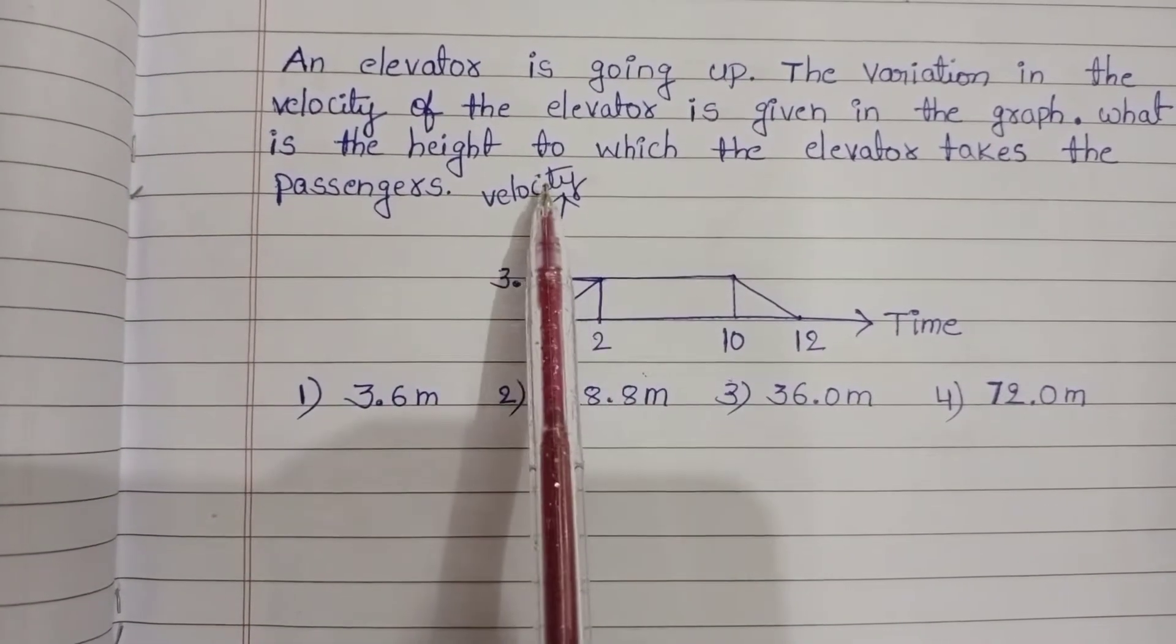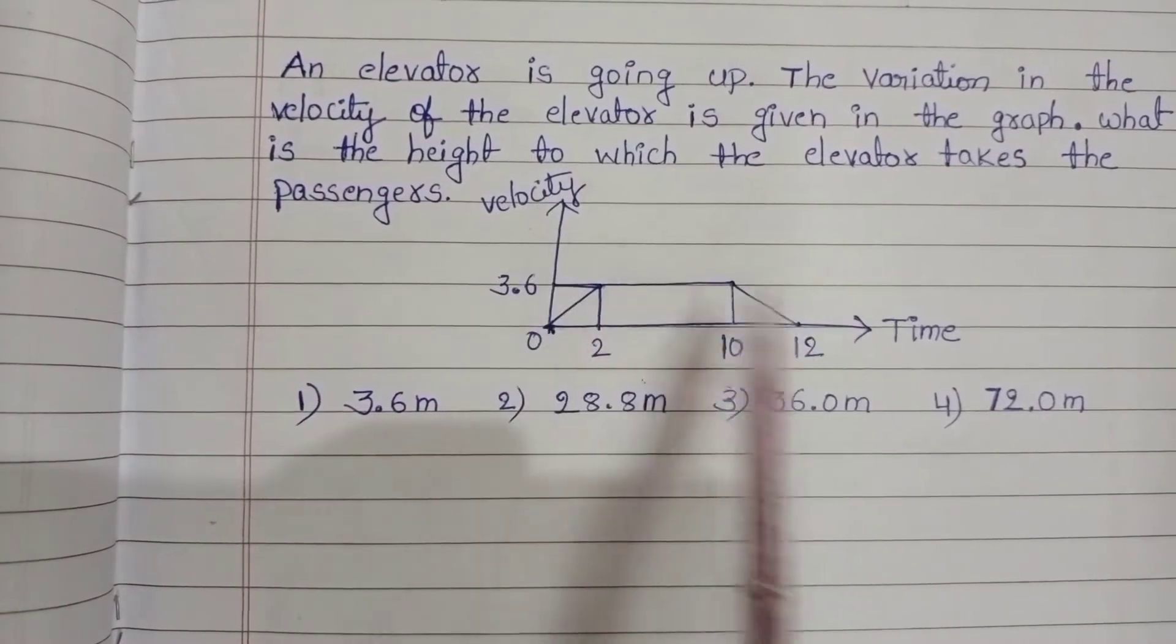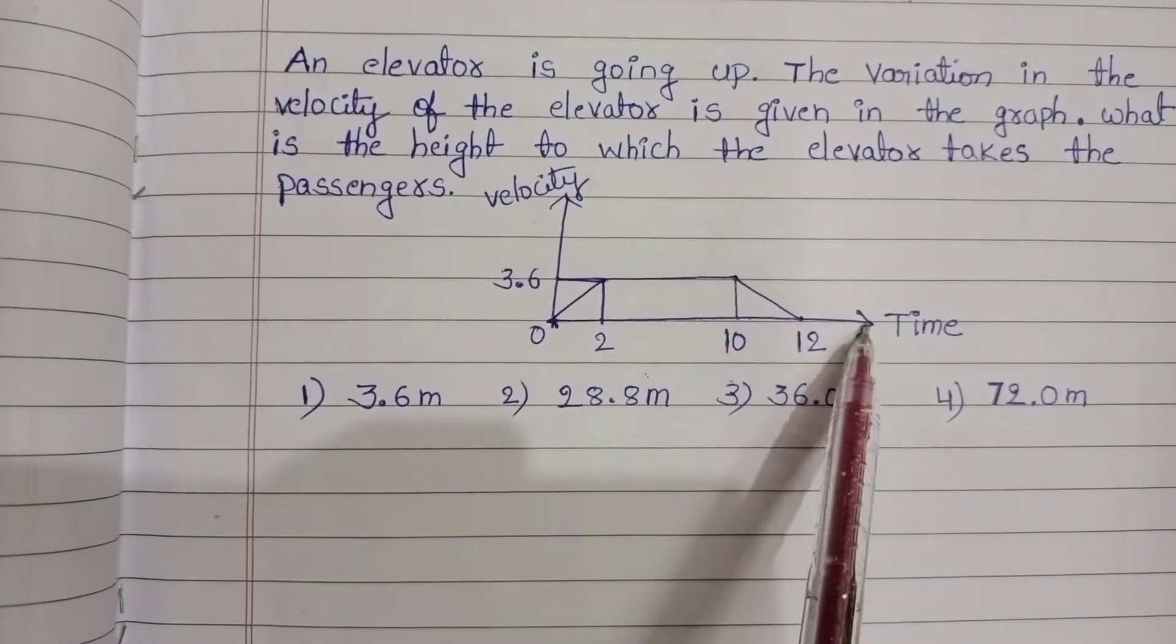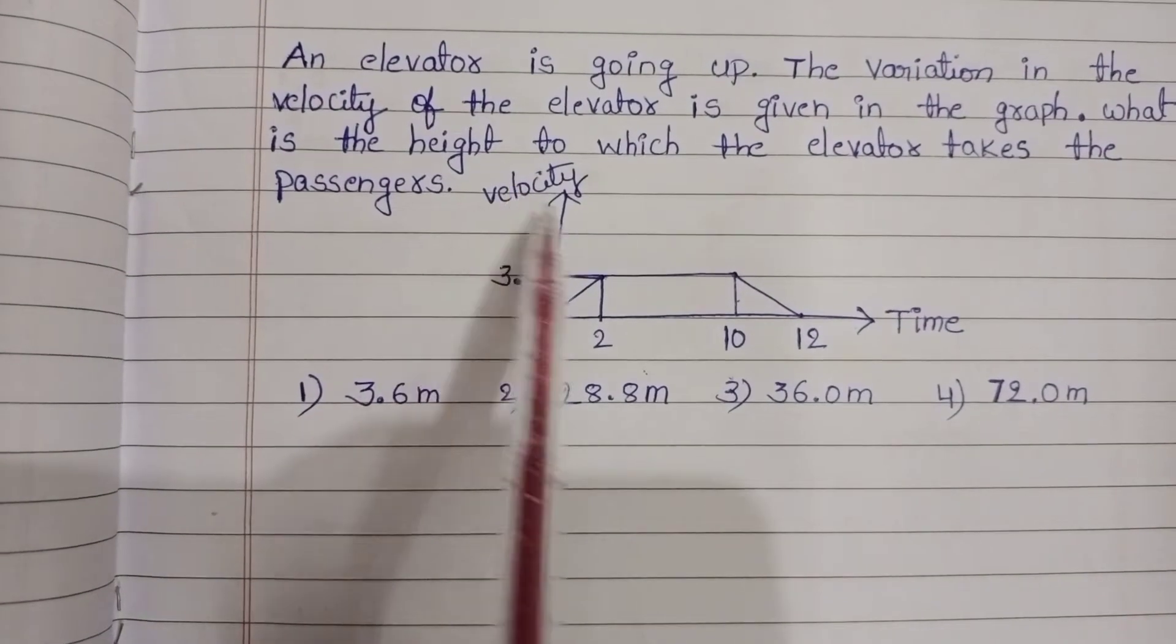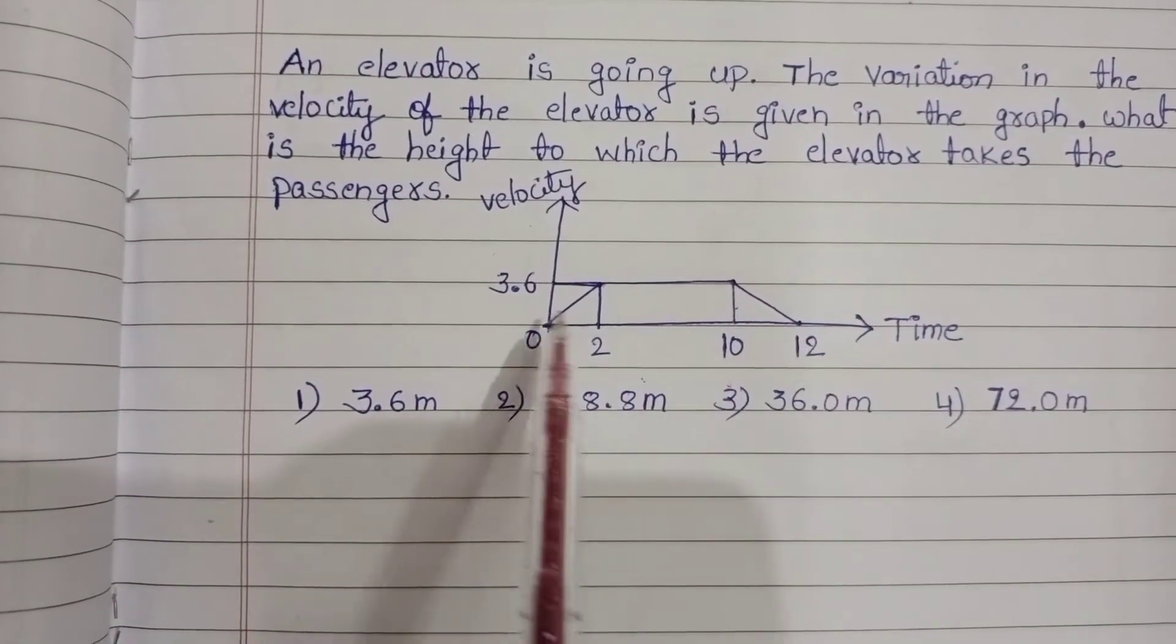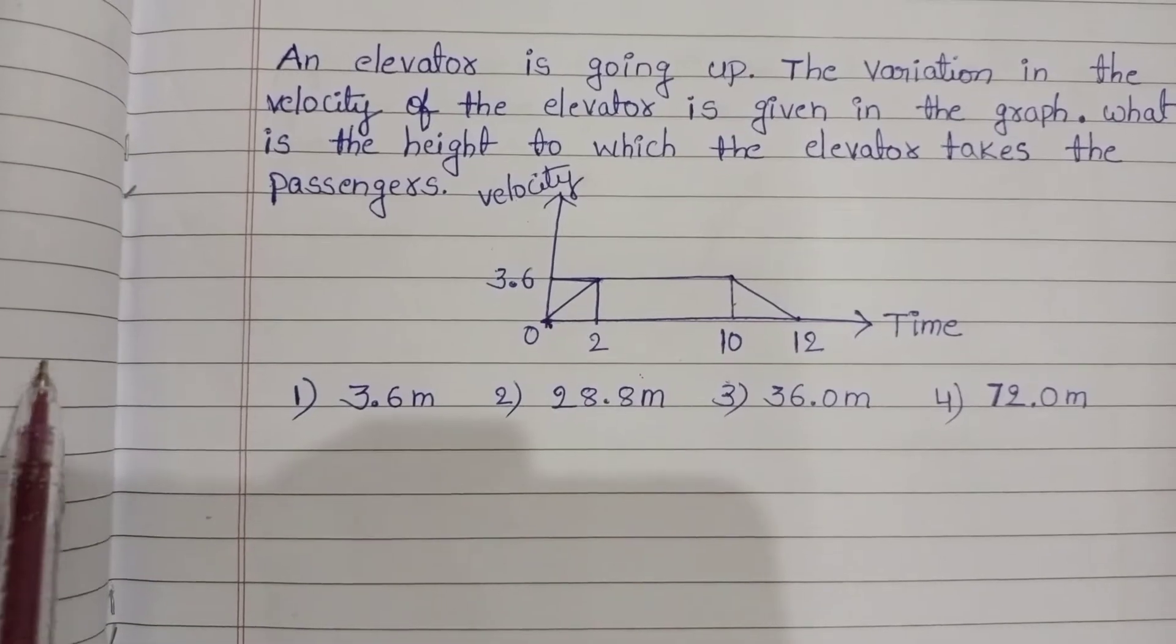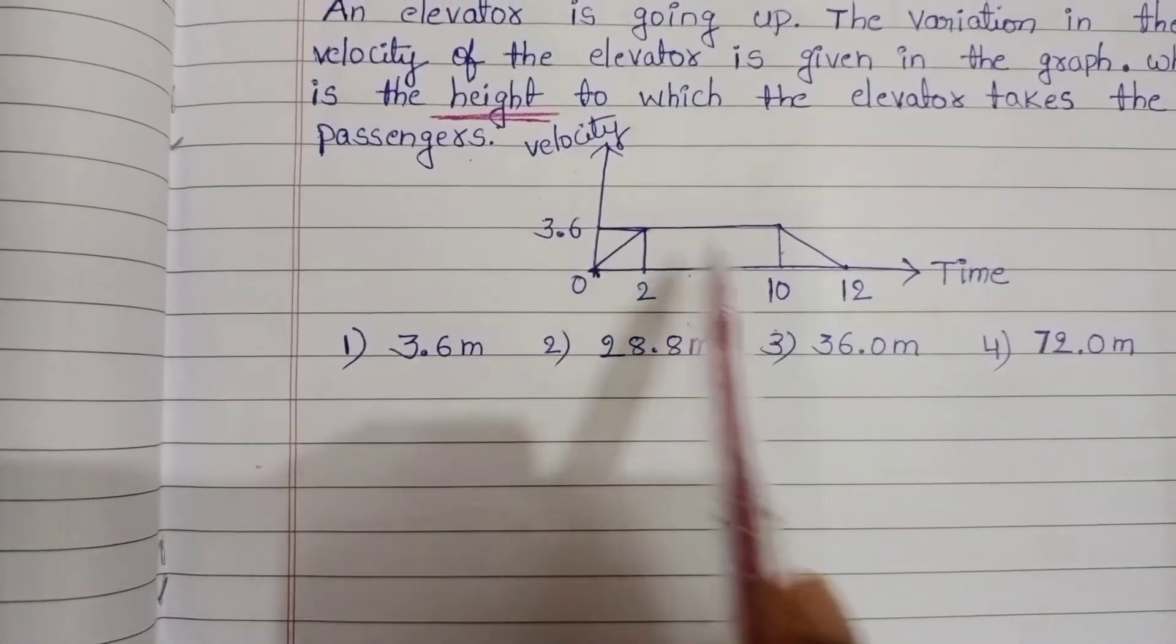Observe the graph - the given graph is a velocity-time graph. Slope of velocity-time graph gives acceleration, and area of velocity-time graph gives the displacement.